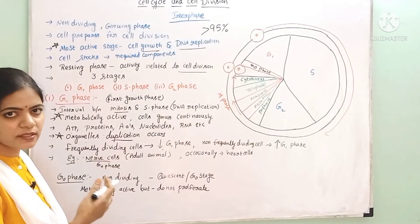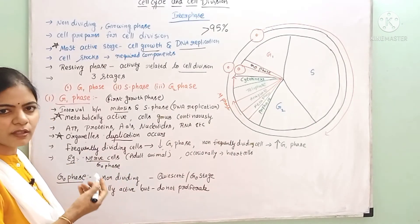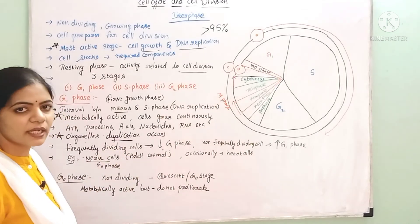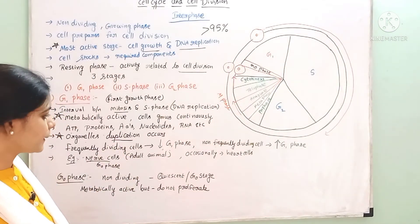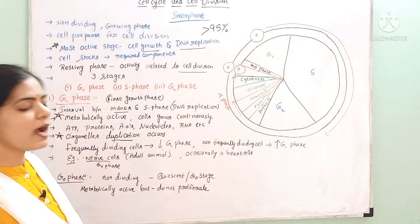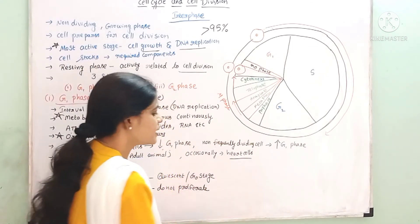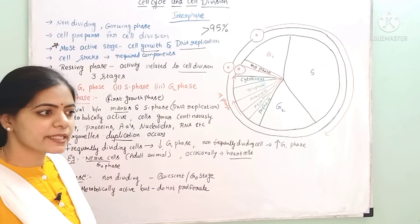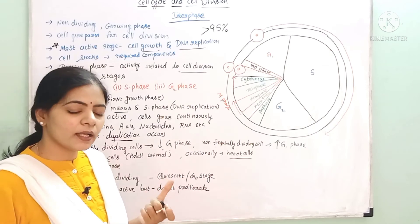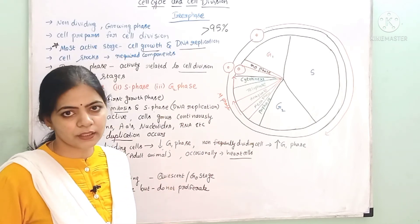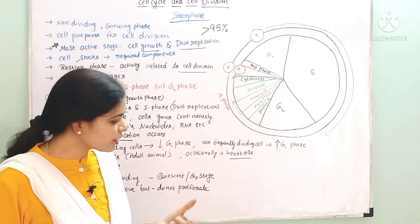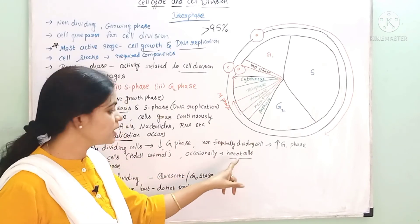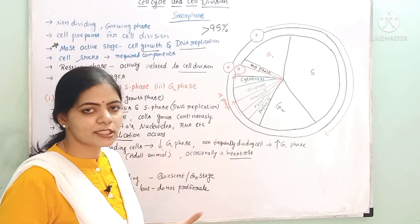When cells like nerve cells are broken or damaged, they are replaced because of cell division. Heart cells also have a long G1 phase. Some cells, like heart cells, divide only occasionally. When cells are damaged, they are replaced through cell division. So these cells are only occasionally involved in cell division.